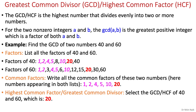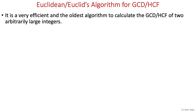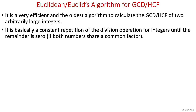So we need to find an efficient method for GCD and that's where we use the Euclidean algorithm. It is a very efficient and the oldest algorithm to calculate the GCD of two arbitrarily large integers. It was described by the Greek mathematician Euclid. The Euclidean algorithm is basically a constant repetition of the division operation for integers until the remainder is 0.